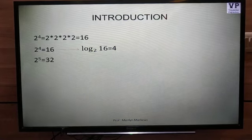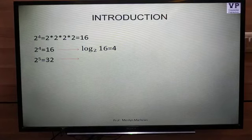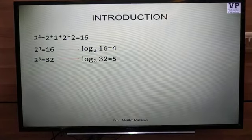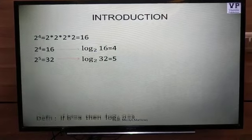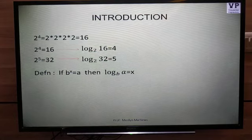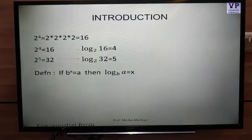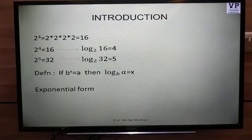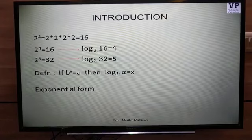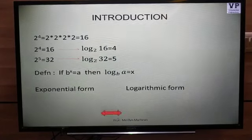If you have 2 raised to 5 is equal to 32, again you can write the same in logarithmic form as log 32 to the base 2 is equal to 5. Then we come up with the definition: if b raised to x equal to a, then log a to the base b is equal to x. This means every number in exponential form can be written as logarithmic form and vice versa.